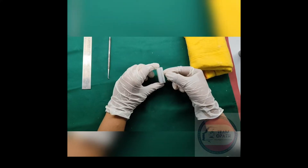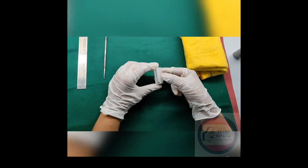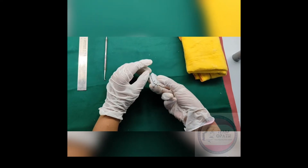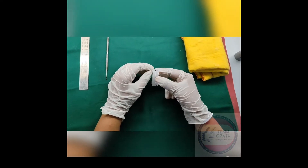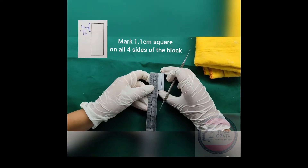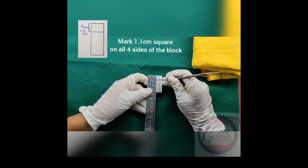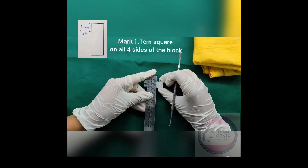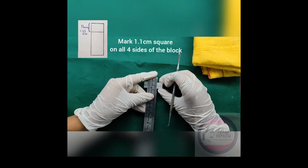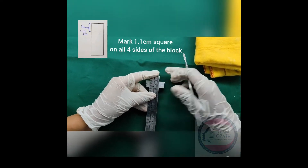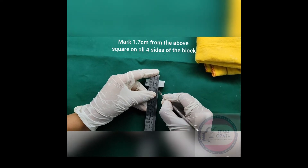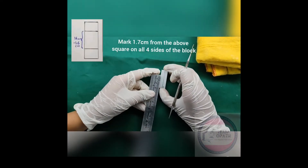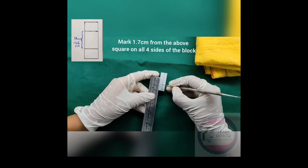Mark all 4 sides of the wax block such that the mesial side should be opposite to the distal side, and the labial side should be opposite to the lingual side. Then mark a 1.1cm square on all 4 sides of the block, and from that marking, mark 1.7cm on all 4 sides of the block.